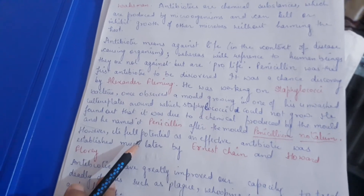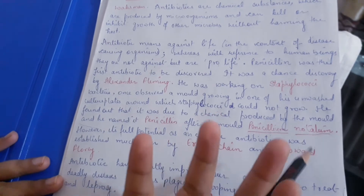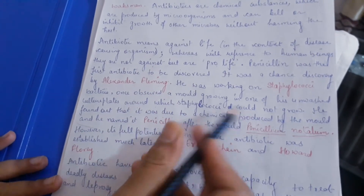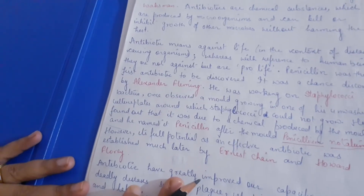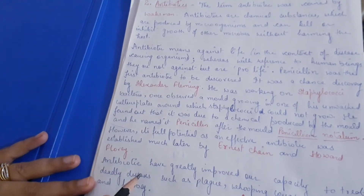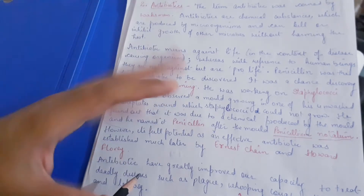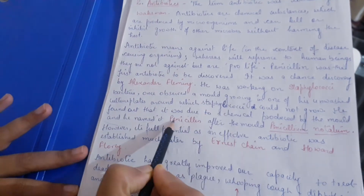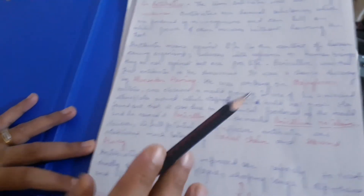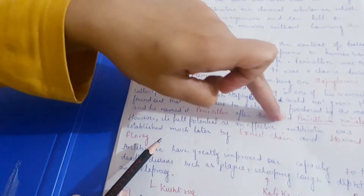Fleming was working on the bacteria Staphylococcus. He observed a mold growing in one of his unwashed culture plates, around which Staphylococcus could not grow. He noticed there was a mold on the culture plate, and the bacteria did not grow around it. The mold was later named Penicillium notatum — also known as bread mold.